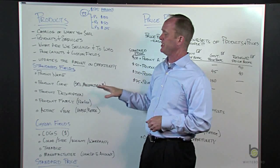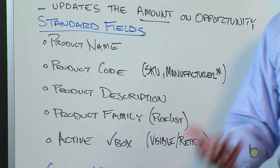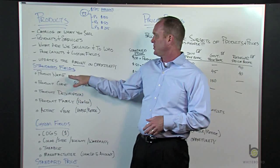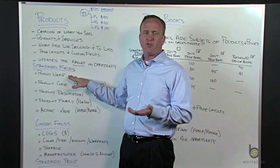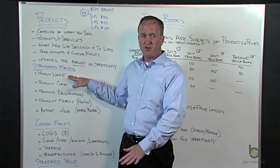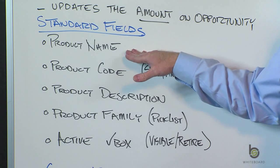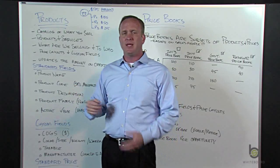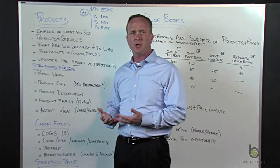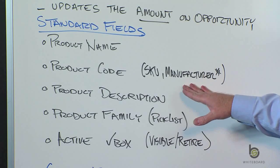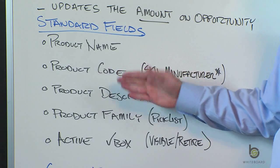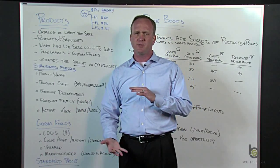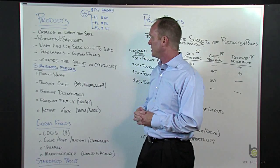Let's talk about the standard fields for a second. Product name is a free-form text field — however you want to make that description of that product. Just realize when you're creating this name, make it something that your salespeople can identify quickly, so when you're seeing a list of hundreds of products, they can tune in real quick. Product code is an out-of-the-box field — you can use it as a SKU number, a stock-keeping unit, or maybe the manufacturer's part number. Product description is a big free-form text field, so if you have a lot of technical specs about a product, go to town.